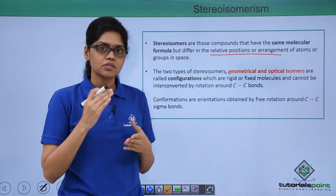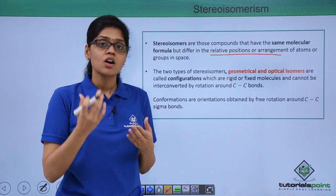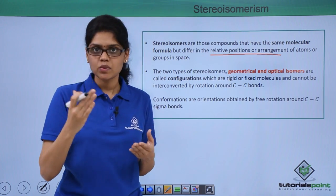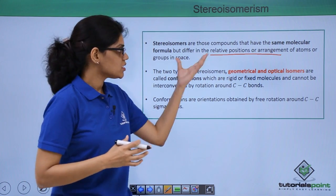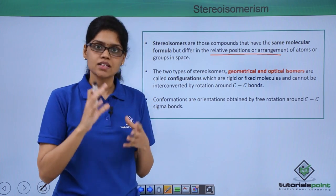Unlike structural isomerism in which the difference was essentially with respect to the connectivity or the way in which atoms were linked with each other, here in stereoisomers the difference is based on their positioning or arrangement in space.